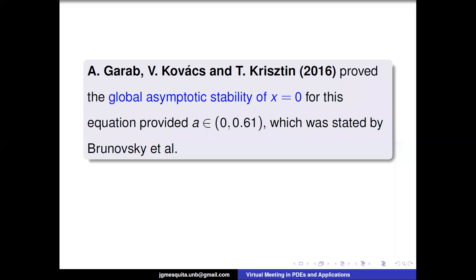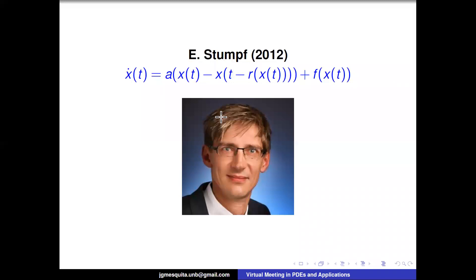Then we have results from Garab, Kovács, and Pföstl, who proved global asymptotic stability of the trivial solution for that equation when the parameter a belongs to a certain interval — something that had been conjectured in the first paper. Later, Stumpf was the first to improve the model by introducing a state-dependent delay term, so the delay now depends on the state of the solution.